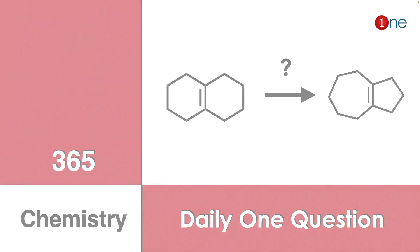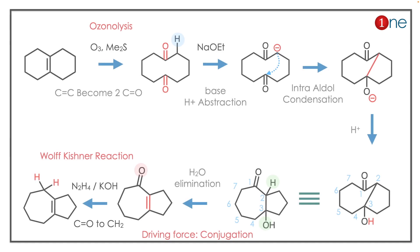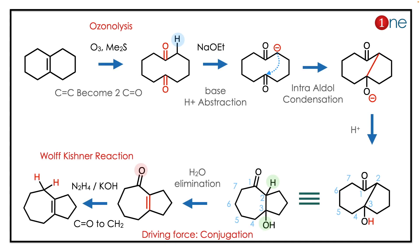The reaction can be easily achieved because you are opening the ring. It can be achieved by ozonolysis. Ozonolysis converts the alkyne to a diketone. Then, in the base form, the anion promotes intramolecular aldol condensation.